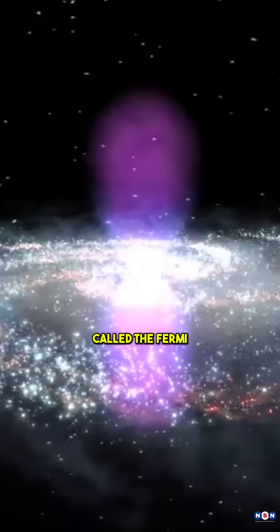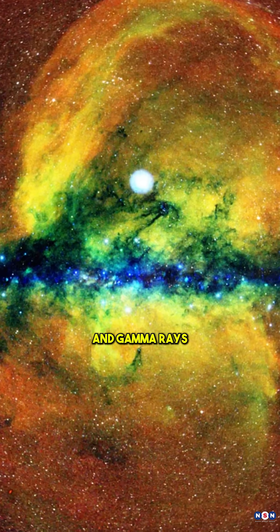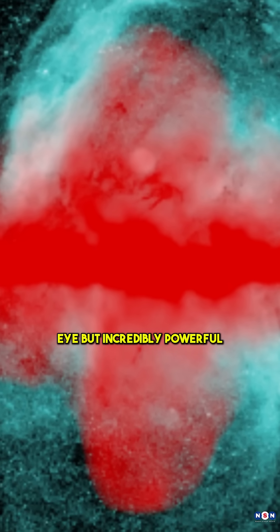These colossal structures, called the Fermi and Erosita bubbles, glow in X-rays and gamma rays, invisible to the naked eye, but incredibly powerful.